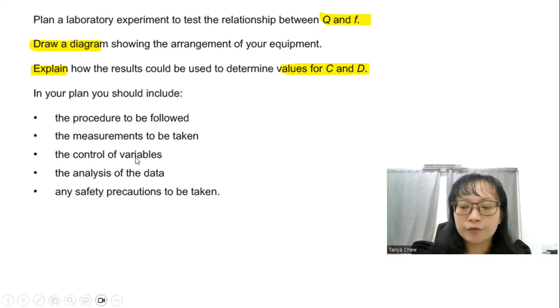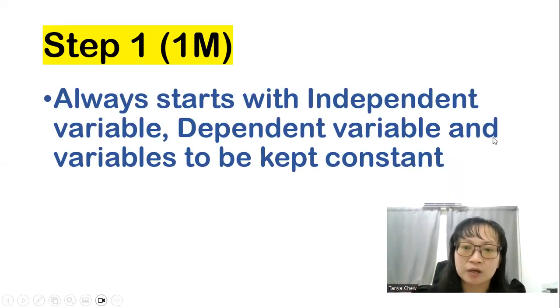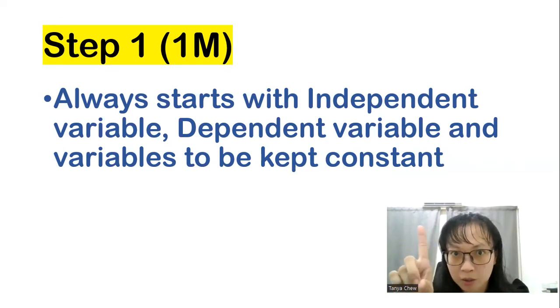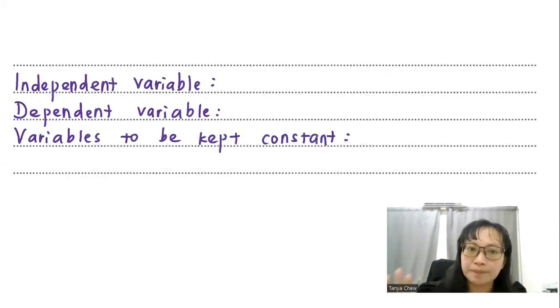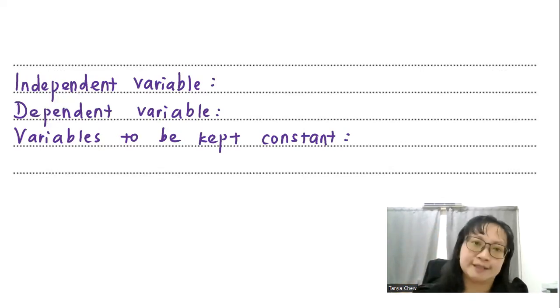So I'm going to give you my formats and some tips to help you plan the experiment more smoothly. The first step always starts with independent variable, dependent variables and variables to be kept constant. And that will give you one mark. So when you see there's a dotted line given here, just ignore your diagram first. Always start with this format. Write down your independent variable, dependent variable and variables to be kept constant. Put in such a way. This is a very neat way. It will help the examiner to see your answer straight away. And they could go easy on you in giving you marks.